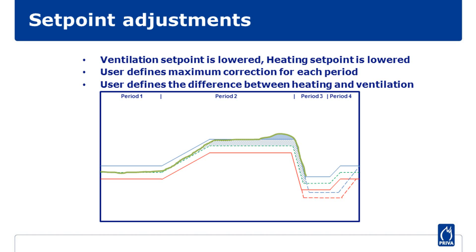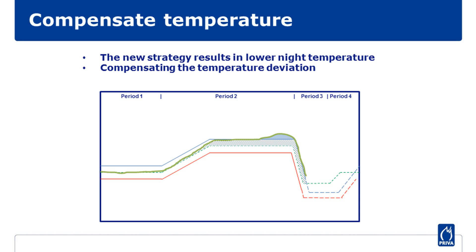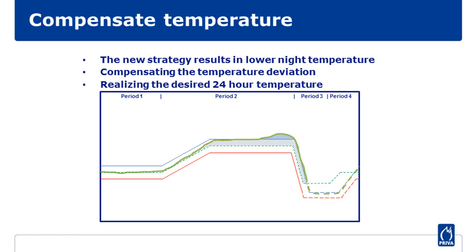As a user, you can set which period you want to apply a correction, and how many degrees relative to the leading control you want to correct up or down. The difference between ventilation and heating — the dead zone — should be minimal. The green hatched area you see is the rate of temperature correction. Notice that the modified strategy results in a lower temperature in the night period. This is to correct the temperature deviation of the day period. With the automatic adjustment of the ventilation and heating strategy, the temperature deviation of the day is now corrected in the night period. This will result in a lower glasshouse temperature as shown in this example.